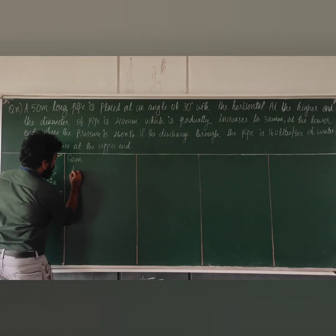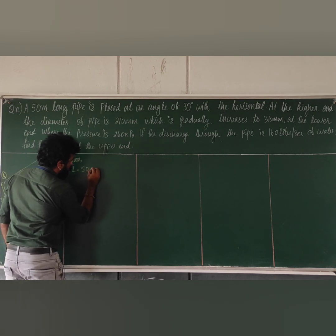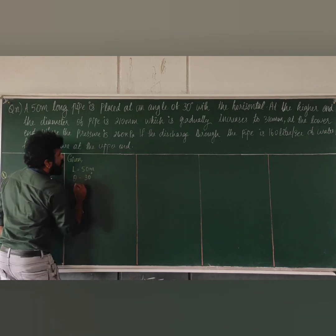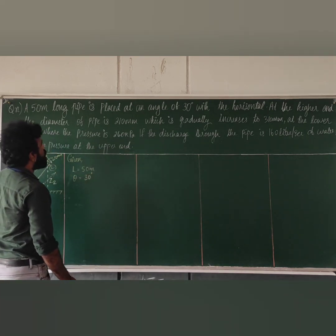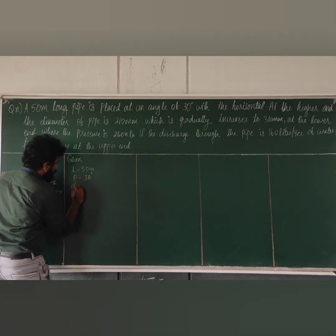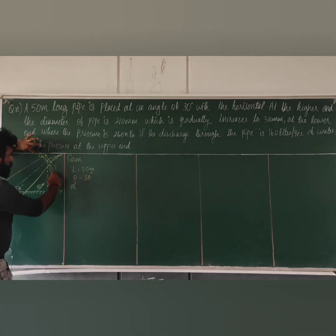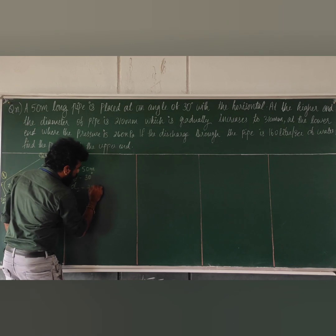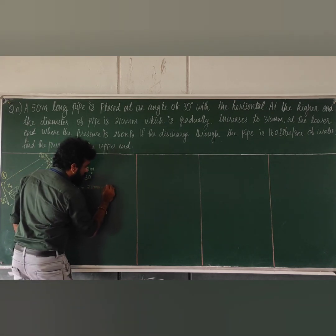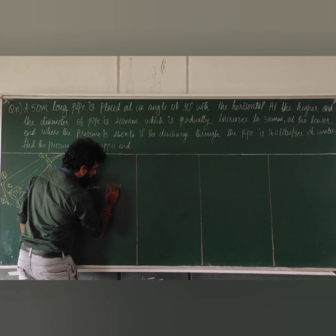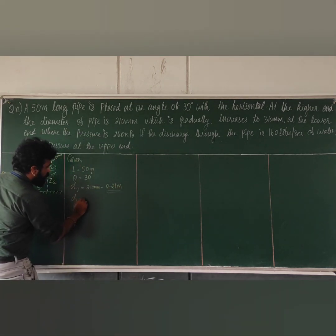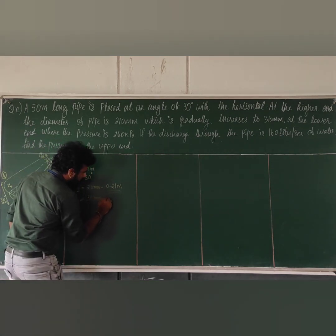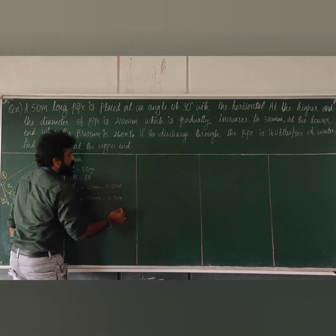Given data: the length is 50 meters, the angle theta is 30 degrees. The diameter D2 is 210 mm, which equals 0.21 meters. D1 is 310 mm, which equals 0.31 meters.